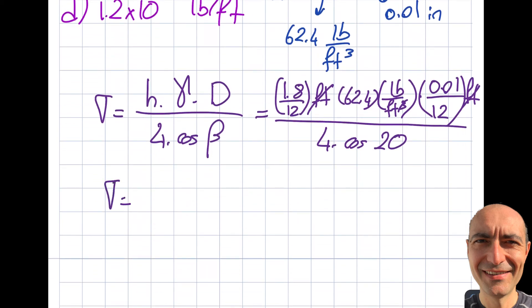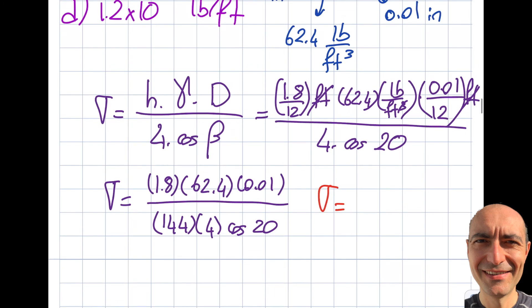So from here basically you get yourself 1.8 times 62.4 times 0.01 divided by 12 squared is 144, times 4 times this cosine of 20. And if I go out and plug this into my calculator I will get myself 2 times 10 to the minus 3.